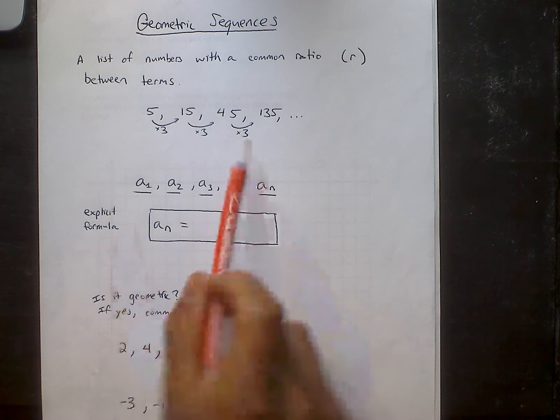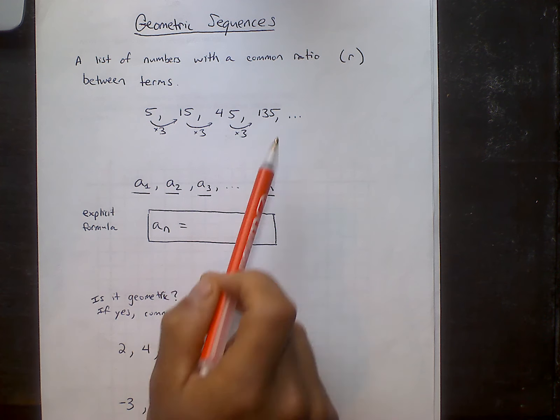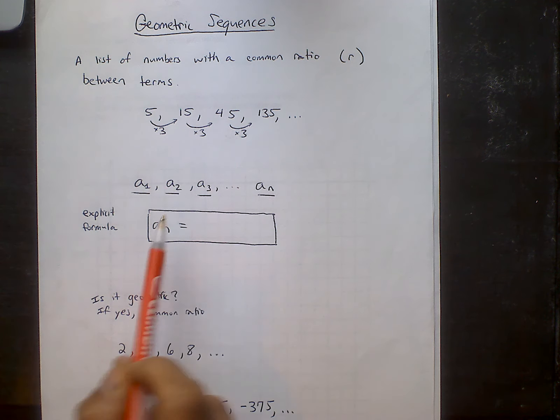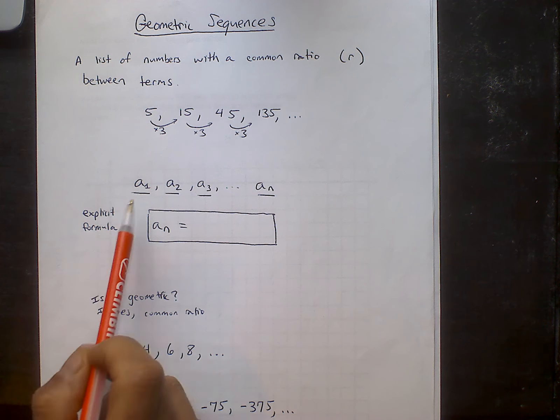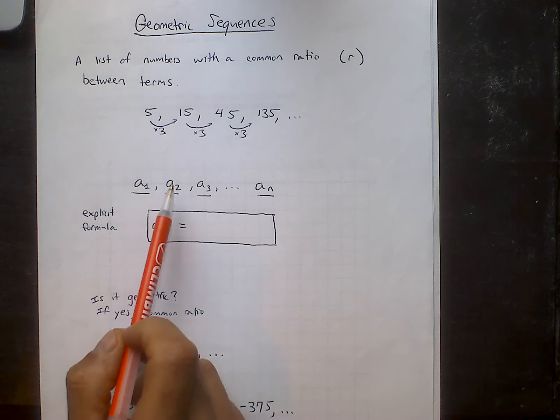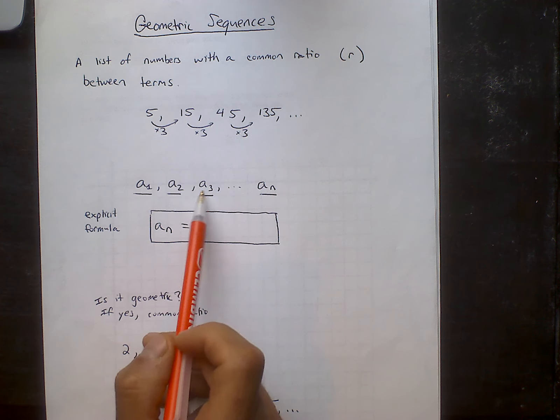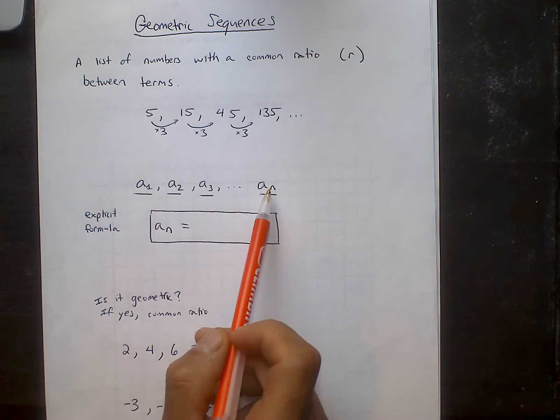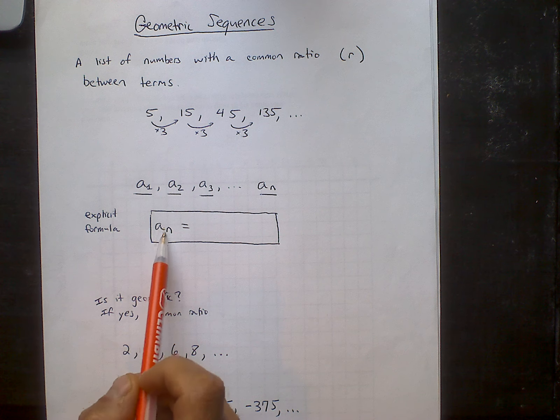We're going to be jumping to a particular term that's not necessarily the next term, so we're going to need something called the explicit formula. In the explicit formula, each term is called a1, a2, a3, or the number of the place that it is in the term, so the nth term would be called an.